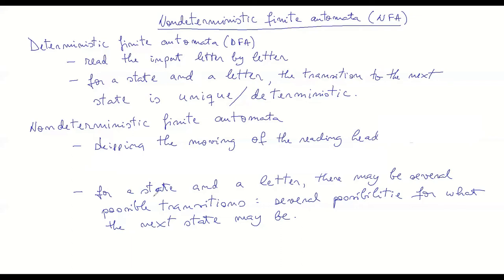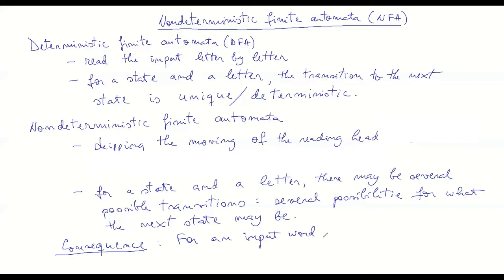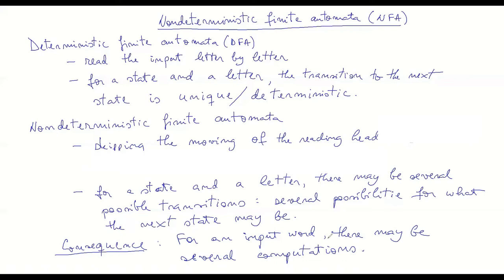The point is that when you are in a state and reading a letter from your input tape, you may have several different options for the next state. This is all defined in the specification of your non-deterministic finite automaton. As a direct consequence, for a given input word there may be several computations, since at each step you might have multiple possibilities for how to change state.